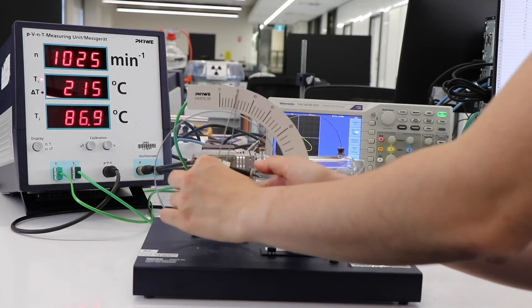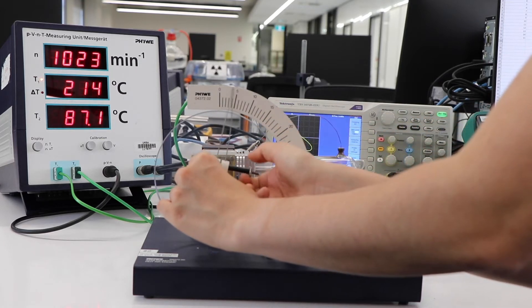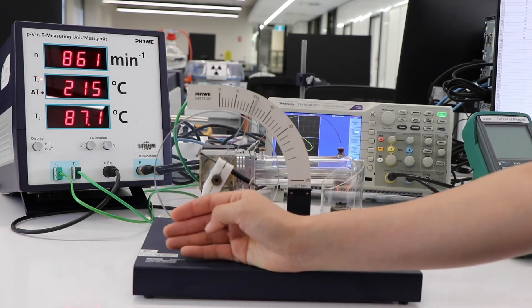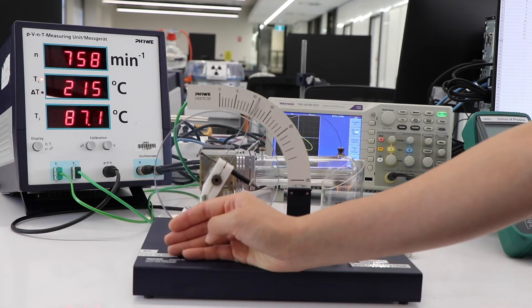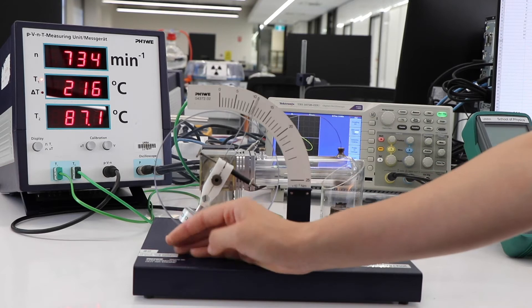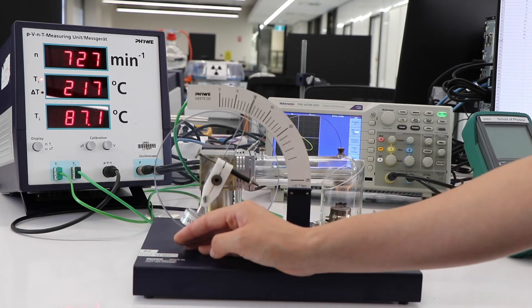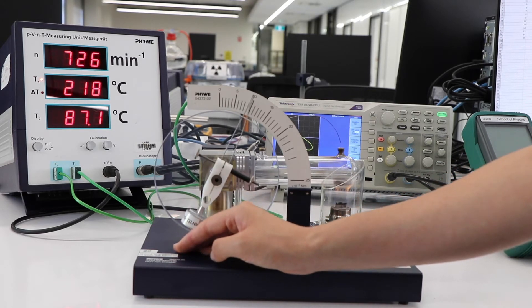If I increase the friction, more work is done. And therefore our angular velocity changes again. And by measuring these two we can look at the power output of our Stirling engine.